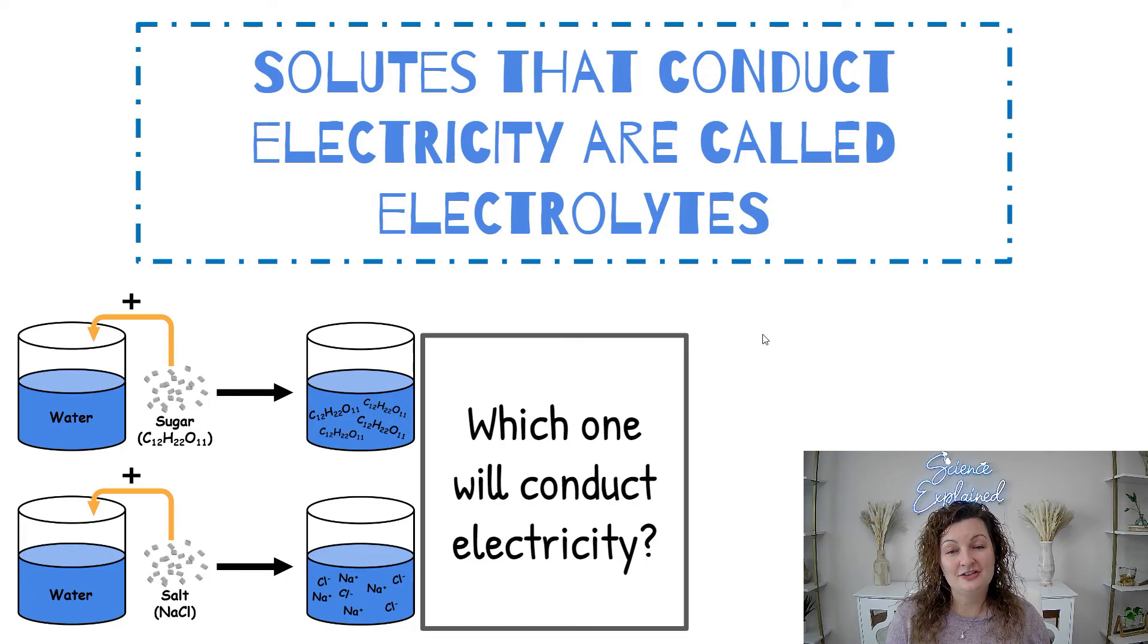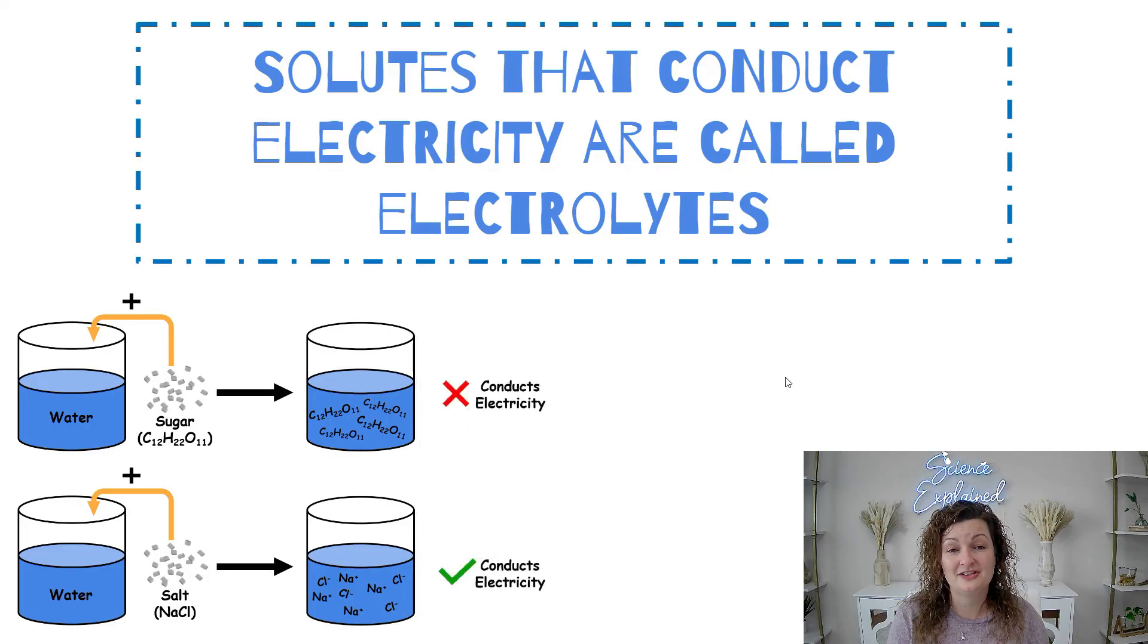Solutes that conduct electricity are called electrolytes. I want to reiterate this with you. If I were to say we're dissolving some sugar in water, I hope you can tell me that it will not be conducting electricity because sugar is covalent and not an electrolyte. Salt dissolved in water is an electrolyte and will fully dissociate, so that one will definitely conduct electricity. I hope this was really helpful to you. If you need to know more about chemistry, go ahead and look at the rest of my videos, subscribe, like, and I'll see y'all next time. Bye everybody.